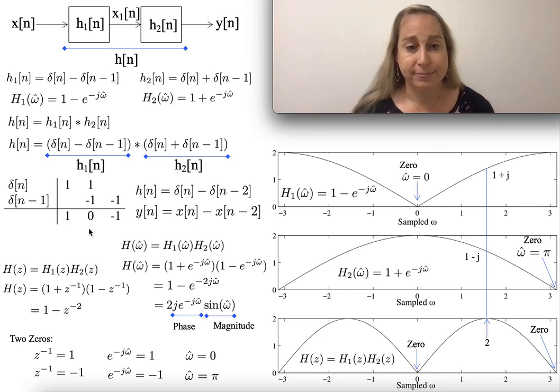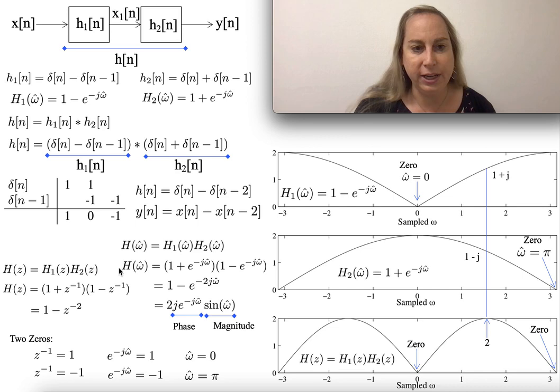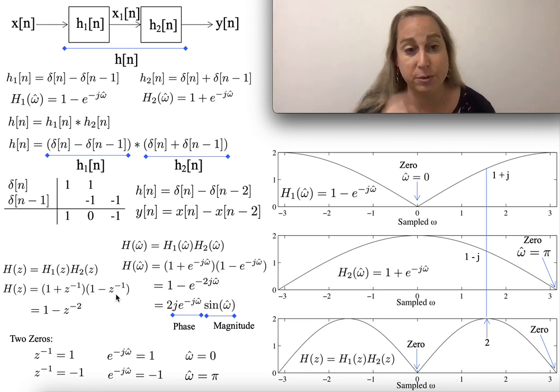Great. I also know that the transfer function for z in the z-domain is going to be related to the product of the two. Well, the z-domain for the first one is 1 minus z^(-1), and for the second one is 1 plus z^(-1). This is a straightforward multiplication, right? So now it's 1 minus z^(-2).